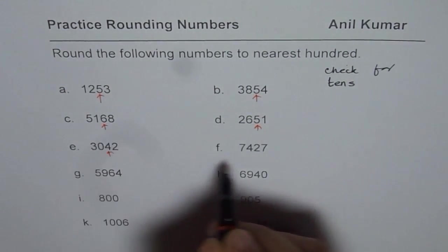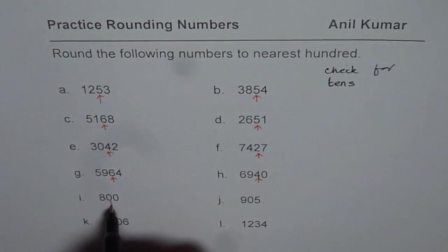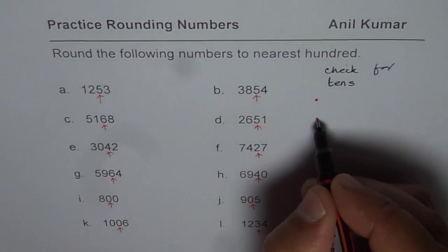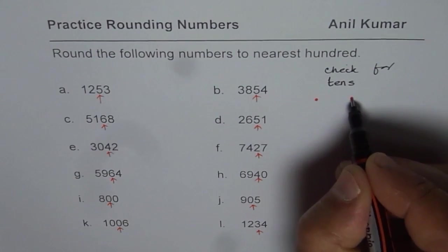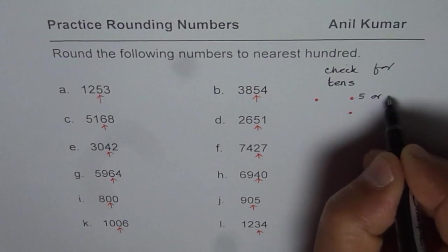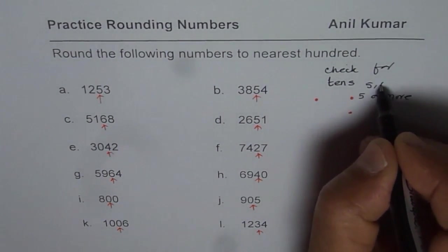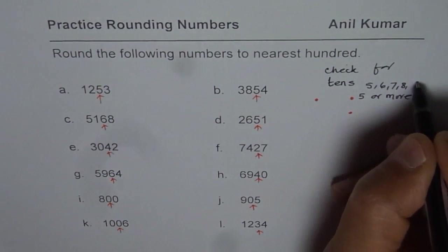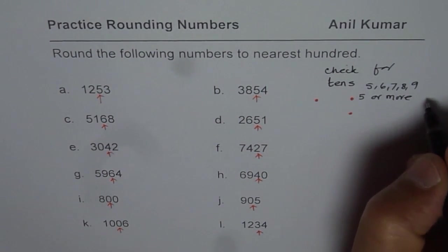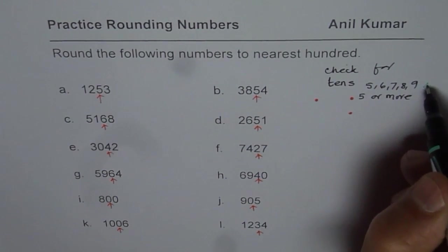You need to check these numbers. If these numbers are 5 or more, you need to round higher. So we have two possibilities. One is 5 or more. It really means 5, 6, 7, 8, 9. These five numbers. Then you round higher.